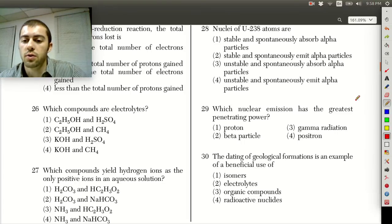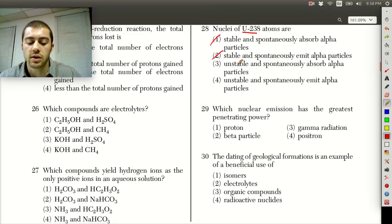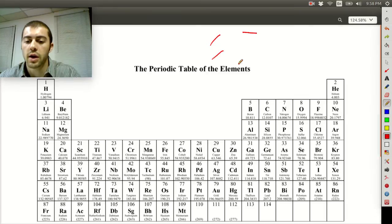Question 28 says nuclei of uranium-238 atoms are... So uranium is a radioactive element, so right away we can eliminate answers 1 and 2. We know that these nuclei are going to be unstable because anything that is higher than atomic number 84, if we look at the periodic table here, uranium...